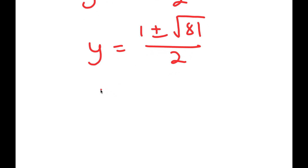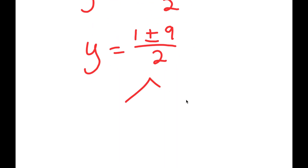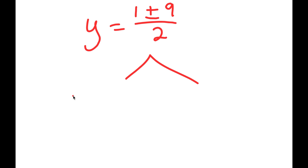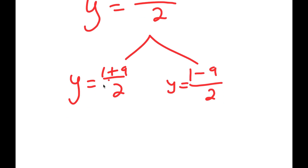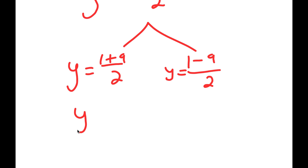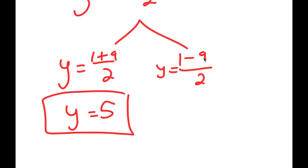So I get y equals 1 plus or minus the square root of 81 over 2. Now, this gives me two solutions: y equals 1 plus 9 over 2, and y equals 1 minus 9 over 2. So 1 plus 9 is 10, and 10 divided by 2 is 5, giving y equals 5 as one solution. And 1 minus 9 is negative 8; negative 8 over 2 is negative 4, so y equals negative 4 is the other solution.